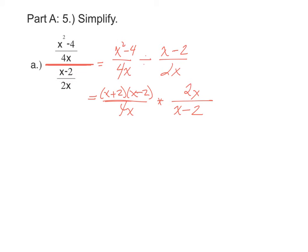Now we can just look for common factors to cancel in the numerator and denominator. x minus 2 is going to cancel with this x minus 2. The x cancels with this x. And 2 will cancel with one of the 2's out of the 4 and leave us with a 2 down here.